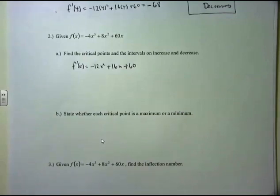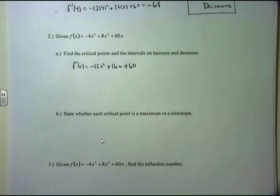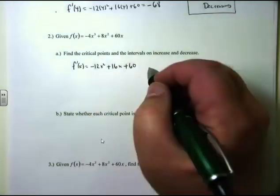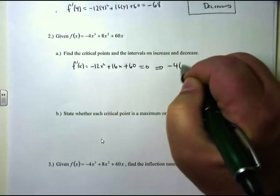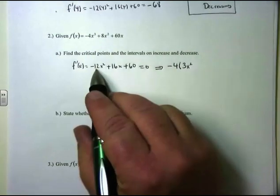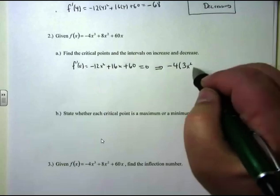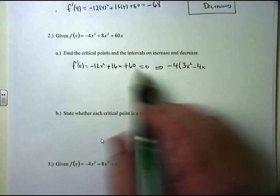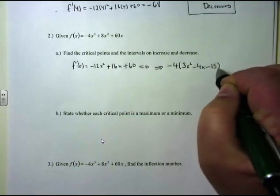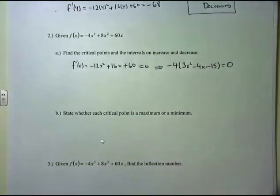Now I believe we can factor something out of this. I'm going to factor out a negative 4 and set it equal to 0. Taking out a negative 4 leaves me with 3x² minus 4x minus 15. Set it equal to 0 and solve.